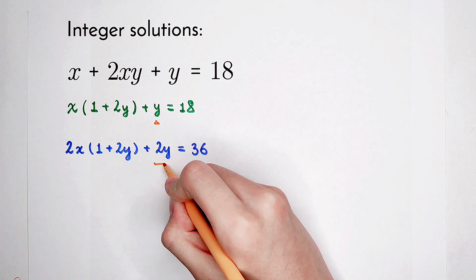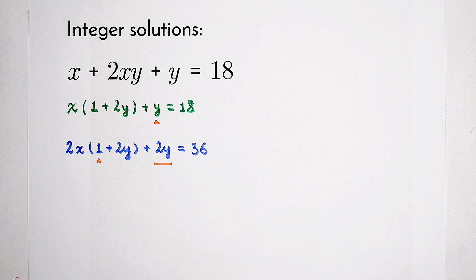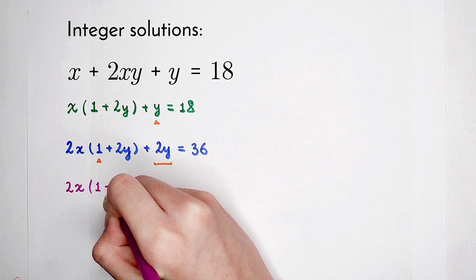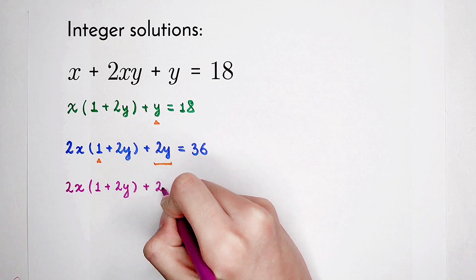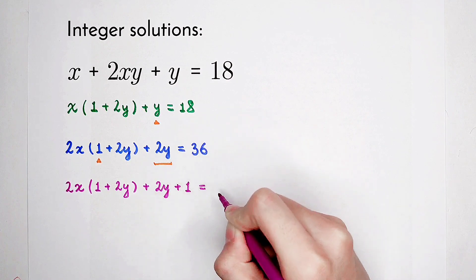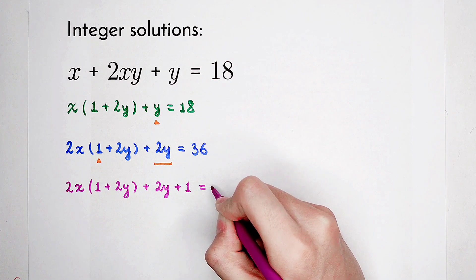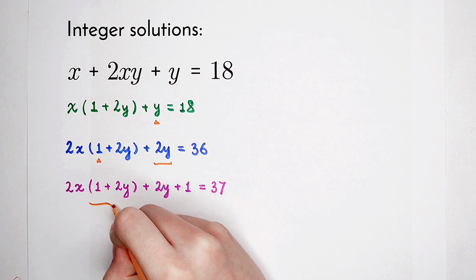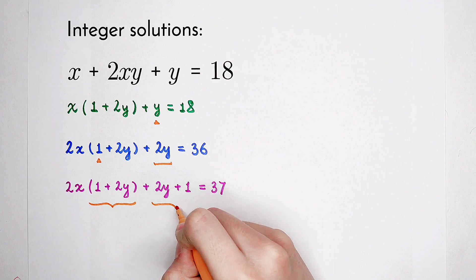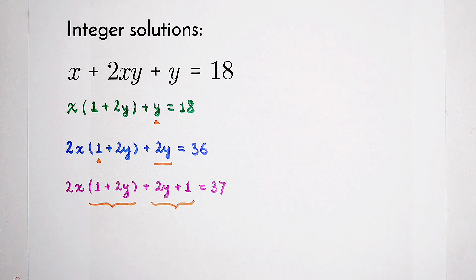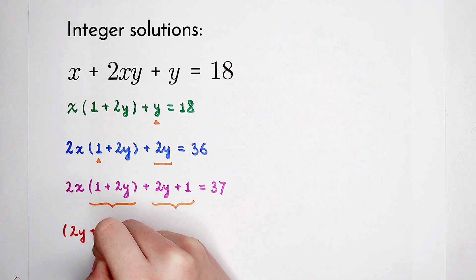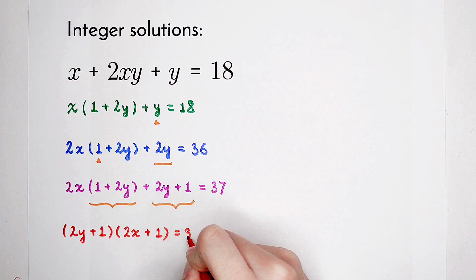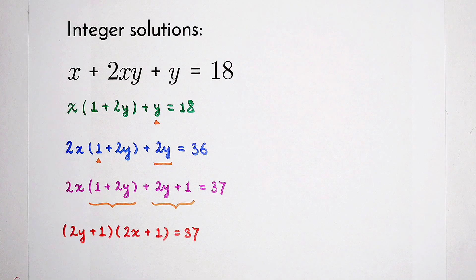Almost successful. We have 2y, but we lack a 1. So we can add 1 to both sides. The left-hand side gets a 1 added, and the right-hand side as well: 36 plus 1 is 37. Now, (1 plus 2y) and (2y plus 1) are the same — so we can factor it out. We get (2y plus 1) times (2x plus 1) equals 37.